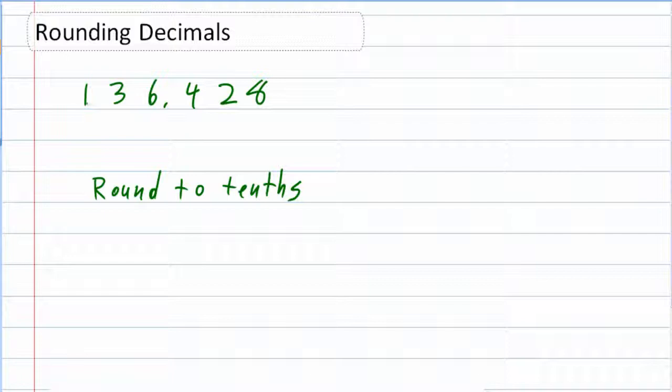So what I'm being asked to do is to actually cut this number off behind the tenths place, keeping in mind that the 4 is our tenths place. We would look at the digit behind the tenths place, which in this case is a 2.